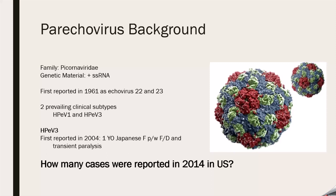There are two prevailing clinical subtypes we're mainly focusing on: parechovirus 1 and 3. Type 1 has more of the GI and URI symptoms, while type 3 is more associated with CNS effects — seizures and meningitis.